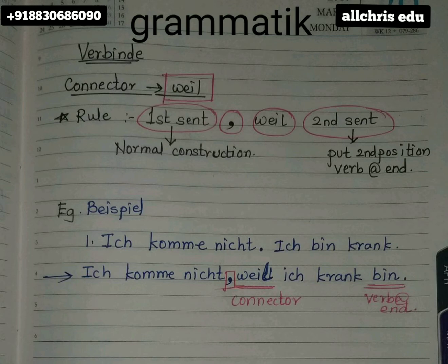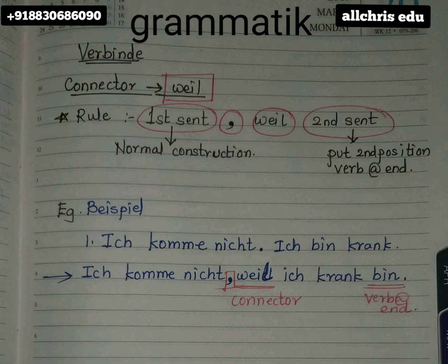When you copy the second sentence, only one thing to make sure: the verb in that second sentence should go to the last position, at the end, before the full stop. You don't need to worry about whether the sentence sounds correct right now — we are not German speakers, so it won't come naturally at first. Once you practice it two, three, four times over a few days, it will start to sound correct. You need to apply the rule first.